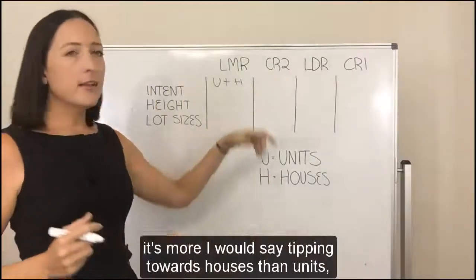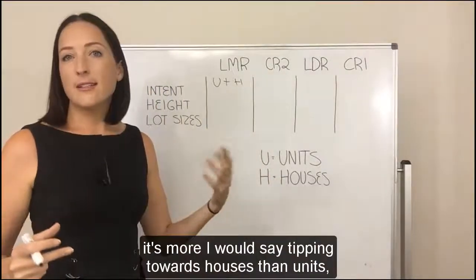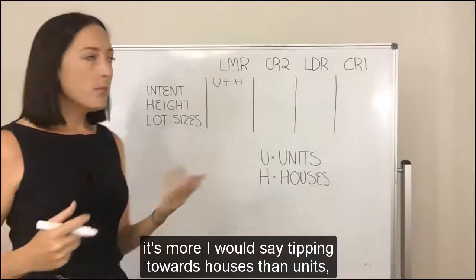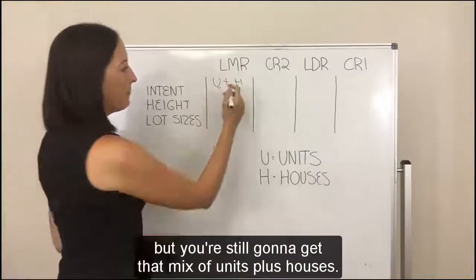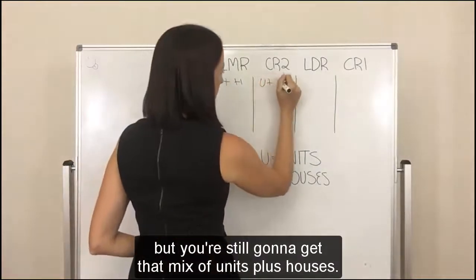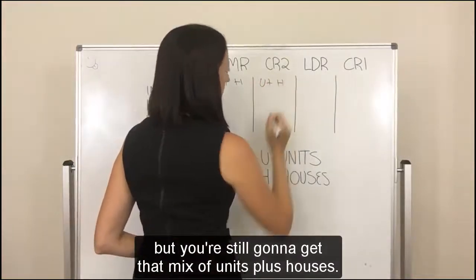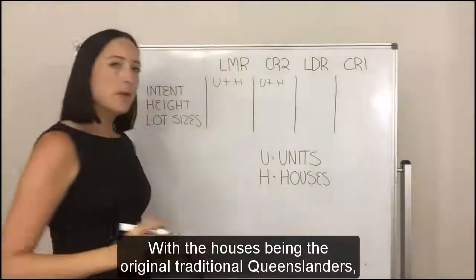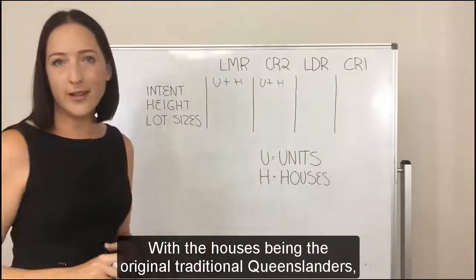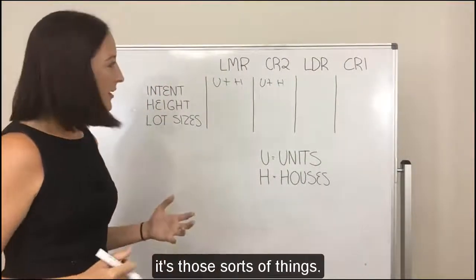This is where you typically see that traditional pre-1947 house at the front and maybe two or three townhouses at the back. It's more tipping towards houses than units, but you're still going to get that mix of units plus houses, with the houses being the original traditional Queenslanders.